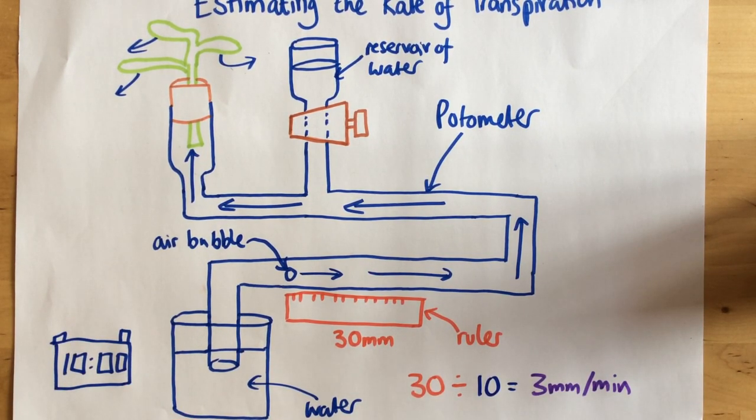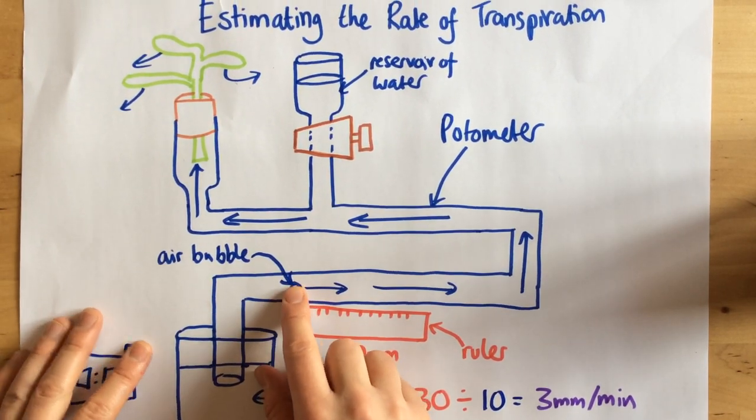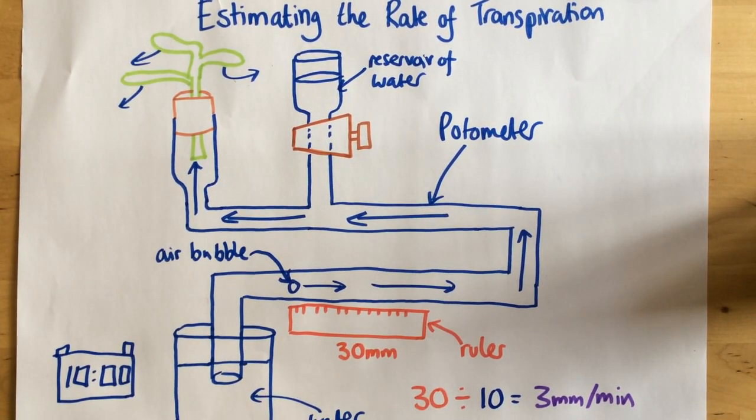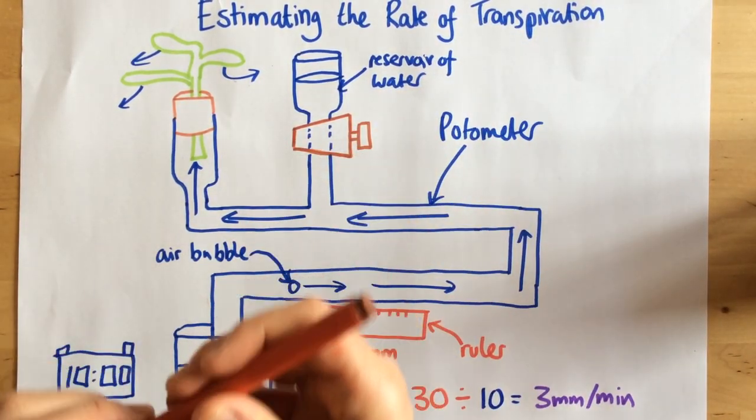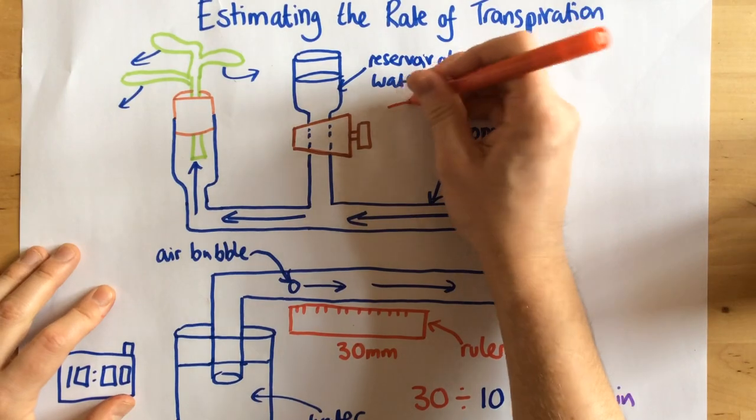So, what I need to do, after I've done the experiment once, so I've allowed the bubble to move once, this is where this reservoir of water and this little tap comes into play. So right here we have a tap.